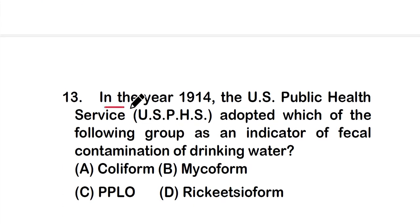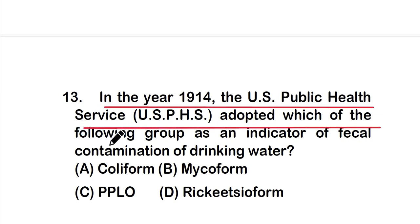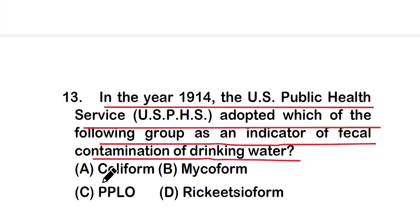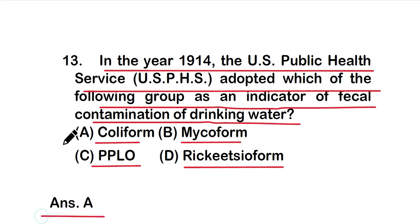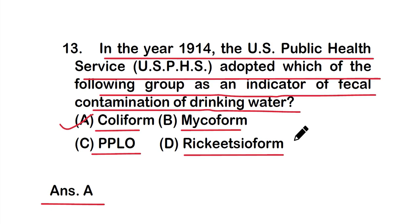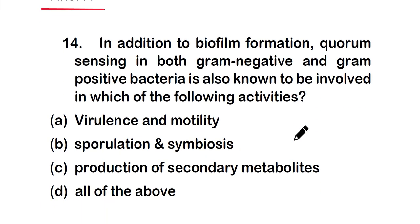Question thirteen: in the year 1914, the U.S. Public Health Service adopted which of the following group as an indicator of fecal contamination of drinking water? Options: coliform, microform, PPL, or Rickettsiform. The right answer is option A — coliform was adopted as the indicator organism for fecal contamination of drinking water.